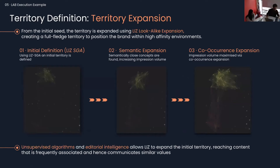From the seed territory we start to build out and expand the content universe using LIZ lookalike expansion, creating a fully fledged territory within relevant environments. We do this in two ways: first, semantic expansion — sourcing semantically close terms that share the same meaning as the initially sourced seed territory list; and second, co-occurrence expansion — capitalizing on terms that co-occur frequently and share related meaning within the seed territory. Simply put, we expand the territory both by semantic analysis and by co-occurrence and frequency of terms and topics.